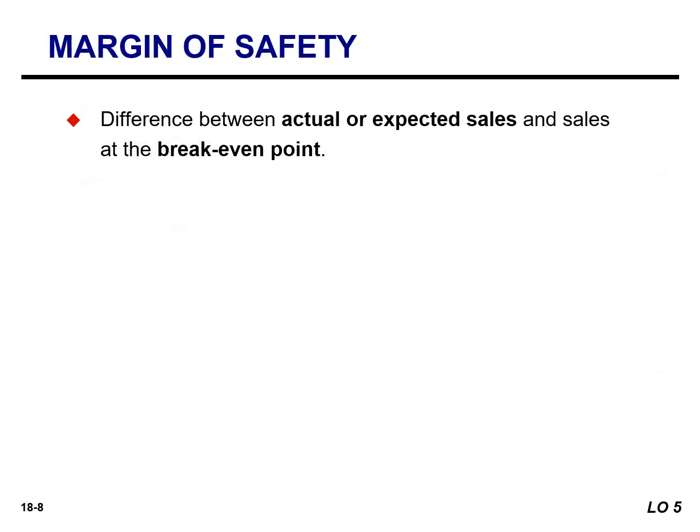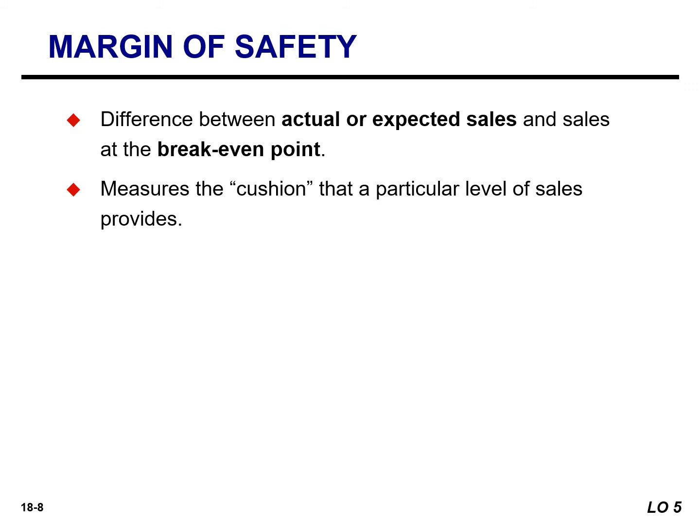Margin of safety is the difference between actual or expected sales and sales at the break-even point. It measures the cushion that a particular level of sales provides, and tells us how far sales could fall before the company begins operating at a loss. The margin of safety is expressed in dollars or as a ratio.